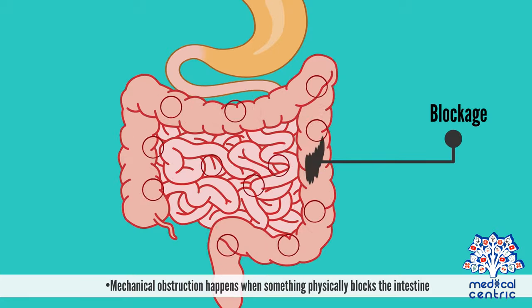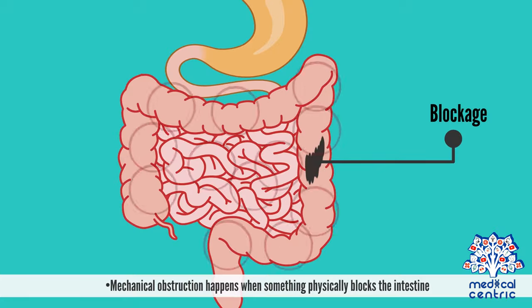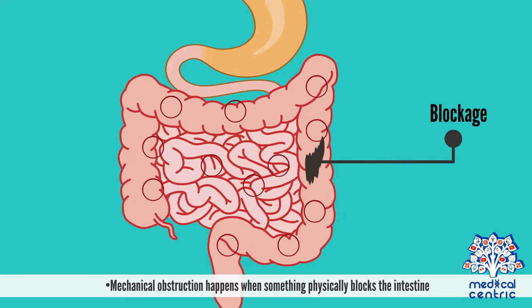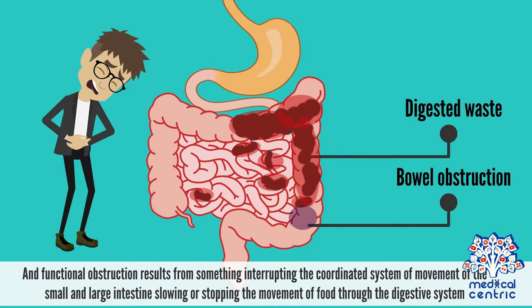Mechanical obstruction happens when something physically blocks the intestine, and functional obstruction results from something interrupting the coordinated system of movement of the small and large intestine, slowing or stopping the movement of food through the digestive system.